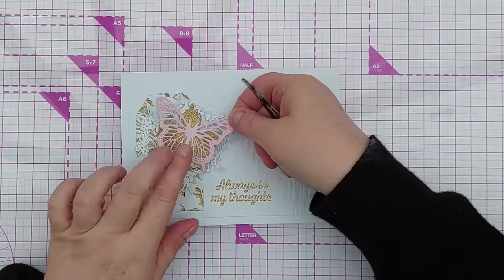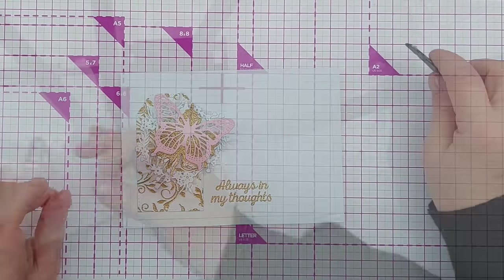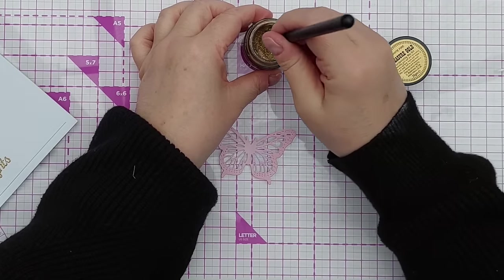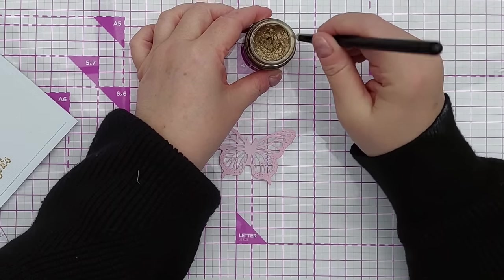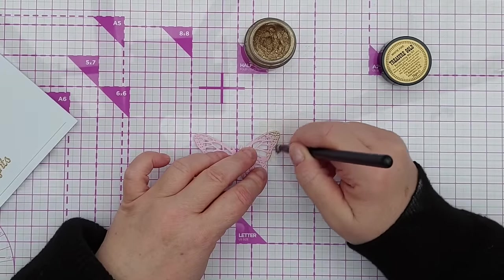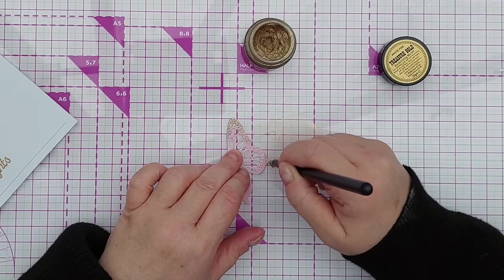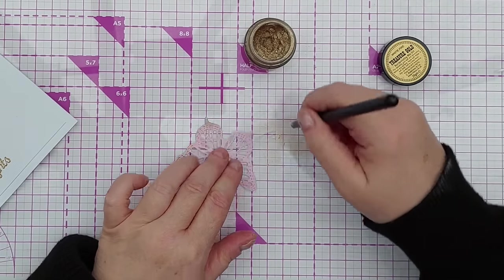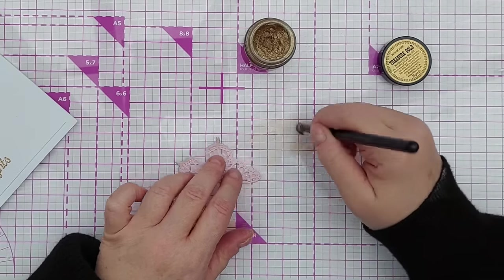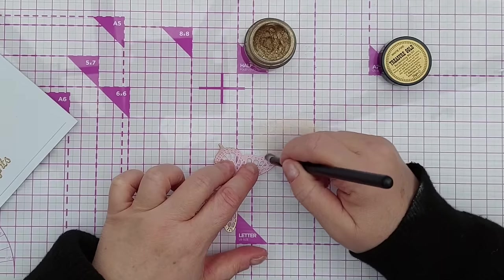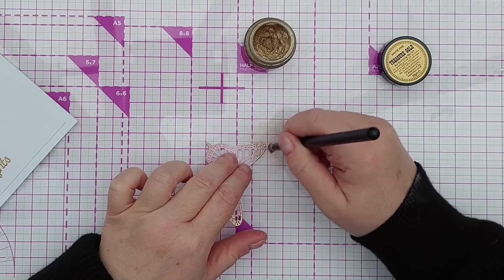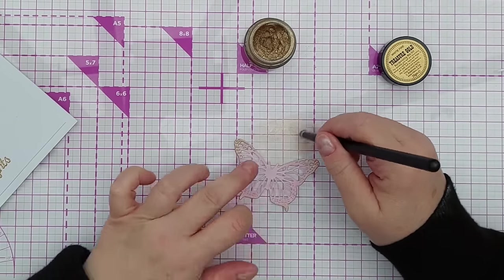So there's our pale pink butterfly which is going to sit on top of that leaf. Before we do anything else with him there, I'm going to gild him slightly. So some gilding wax, and we're going to go in just on the tips of his wings very subtly. I find it's a good idea to kind of bring your color in from the edges rather than going straight in. That way you can have more control, I think.